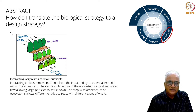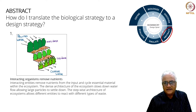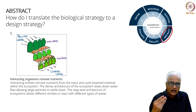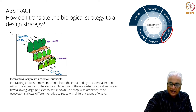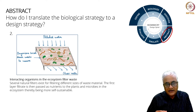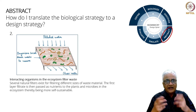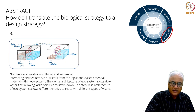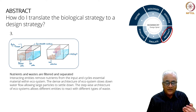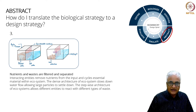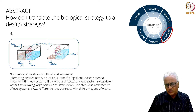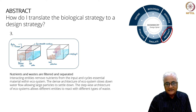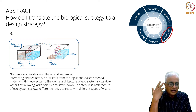The next step is abstract. How do I translate the biological strategy to a design strategy? She's abstracted a design strategy and made some drawings — very, very clear. You can see how easy she's made the process of filtration. She's done one more abstract to explain it even more deeply: how interacting organisms in the ecosystem filter waste. Her whole thing is about filtering and interacting organisms. She's made it even more simple, actually drawn pictures to help us understand. There's one nice term here: stepwise architecture of ecosystems — maybe you can Google that.